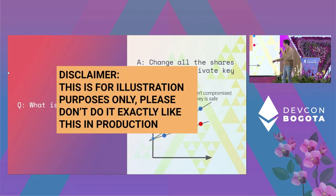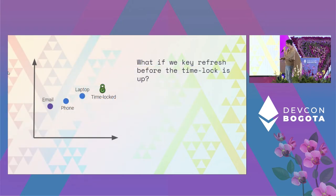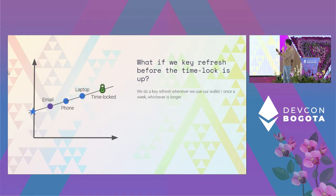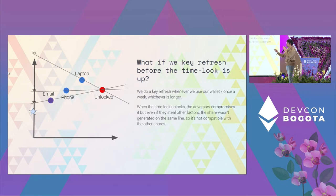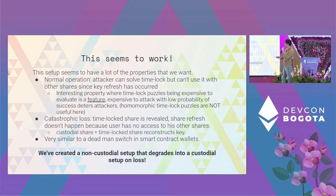So what if we just key-refresh before the time-lock expires? We do a key refresh whenever we use the wallet — maybe once a week — and the time-lock duration is one month. As long as you use the wallet once a week, you do a key refresh, get rid of the shares, and even when the time-lock share eventually unlocks, the attacker can't use it alongside another factor because it's on a different line now.